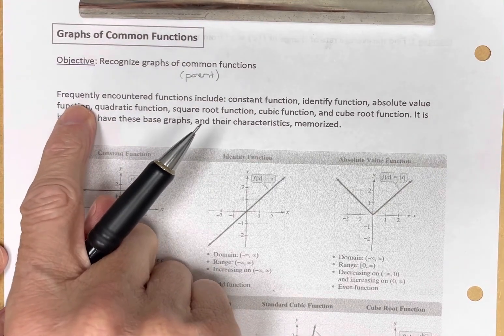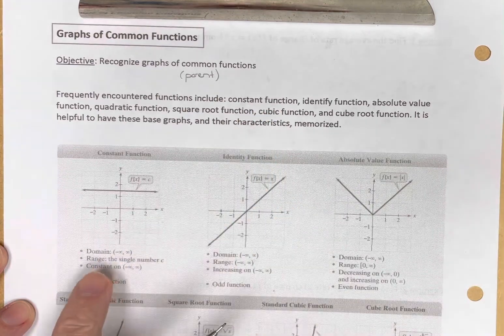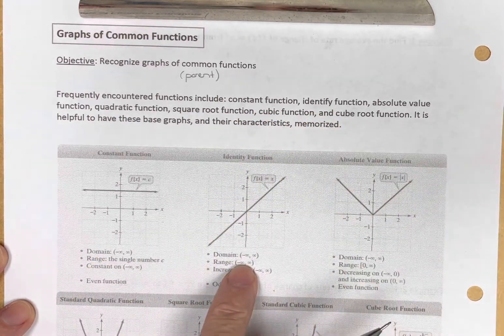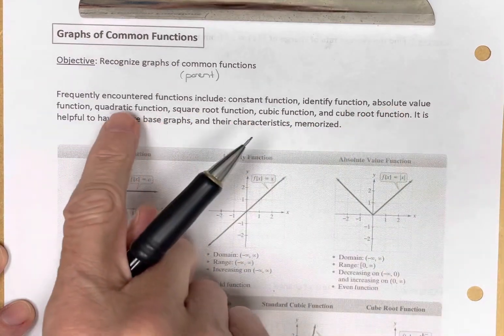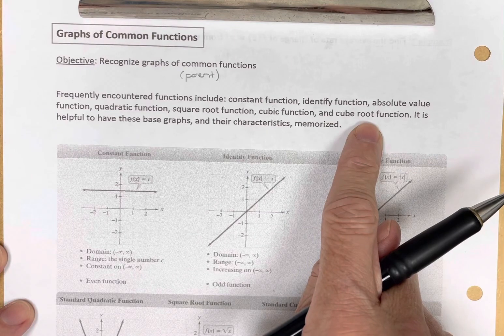And so quickly, frequently encountered functions include the constant function, which is this one here, the identity function, this one here, absolute value, quadratic, square root, cubic, and cube root functions.